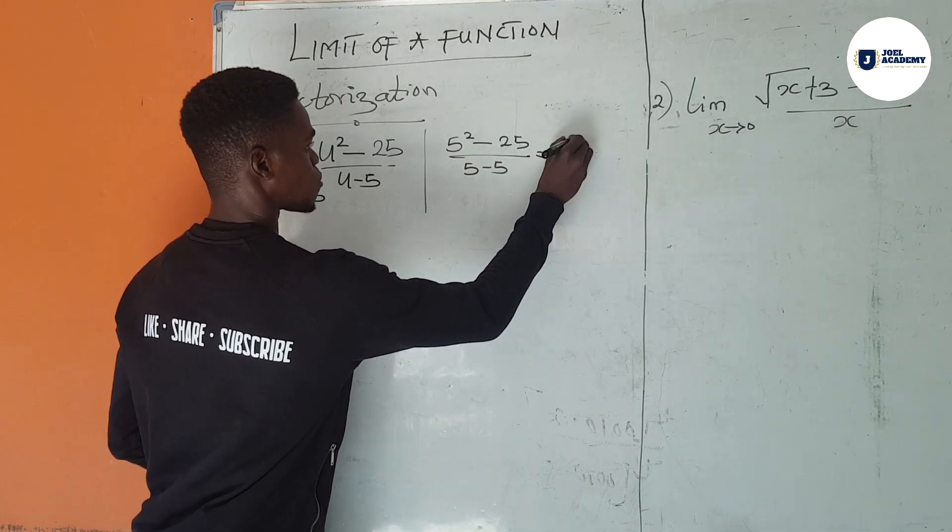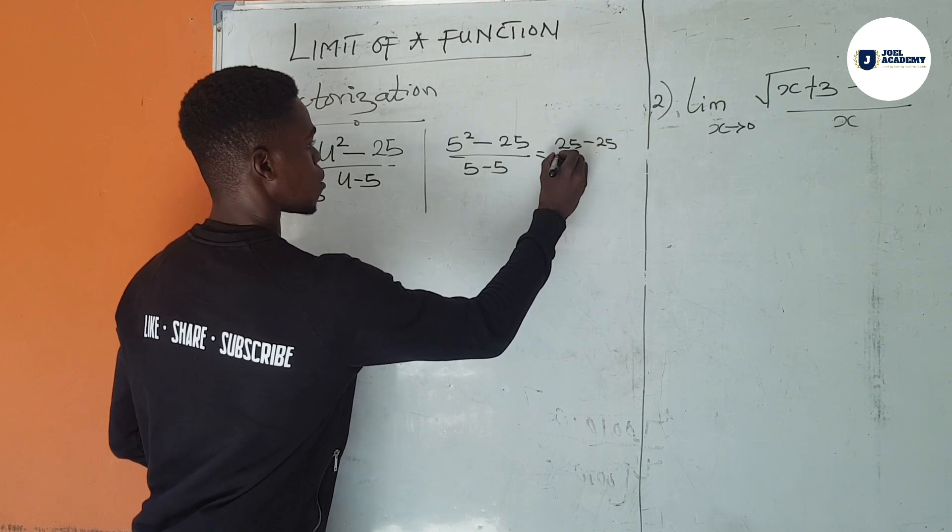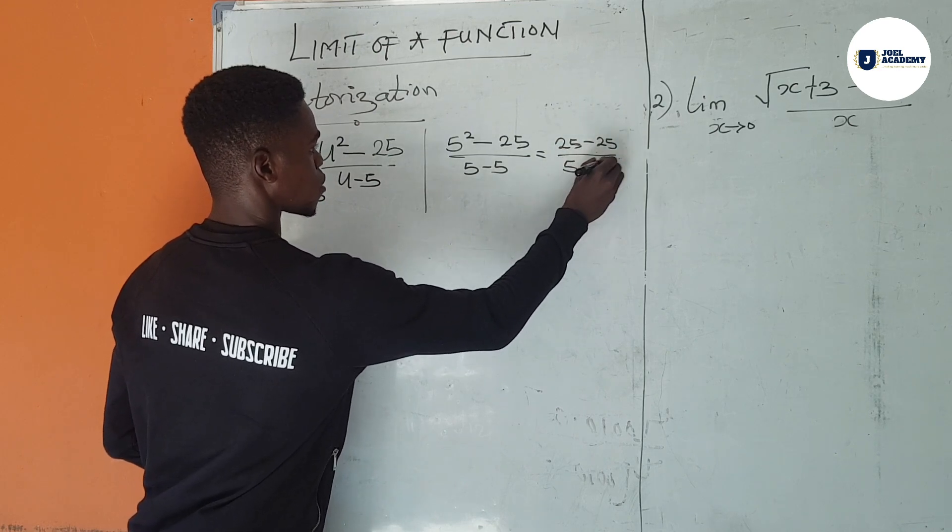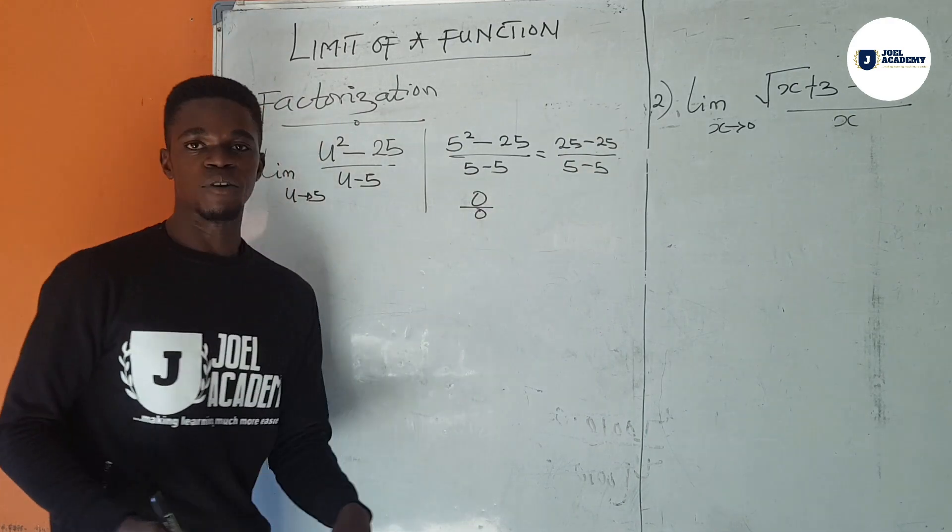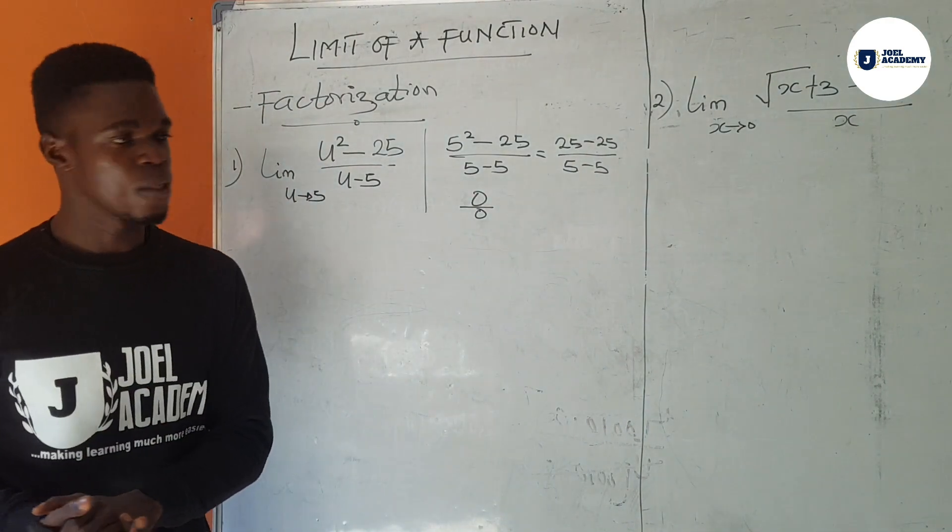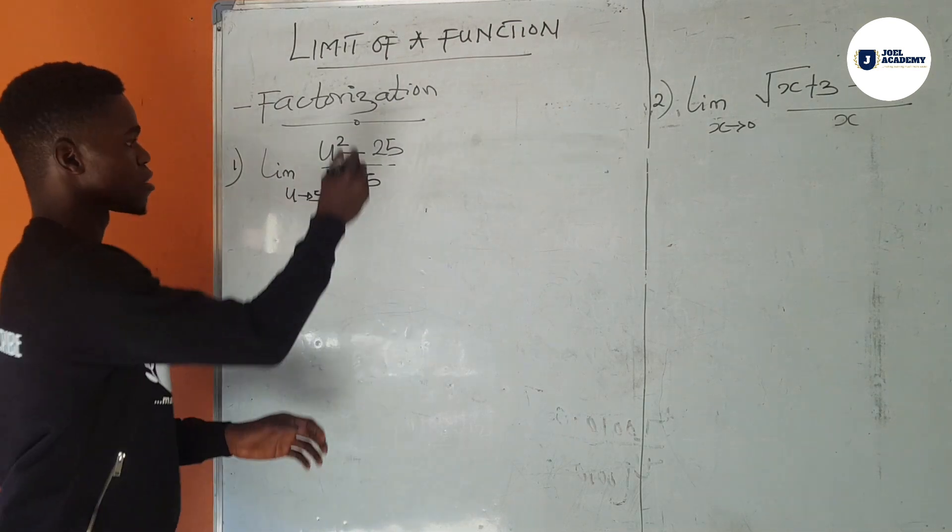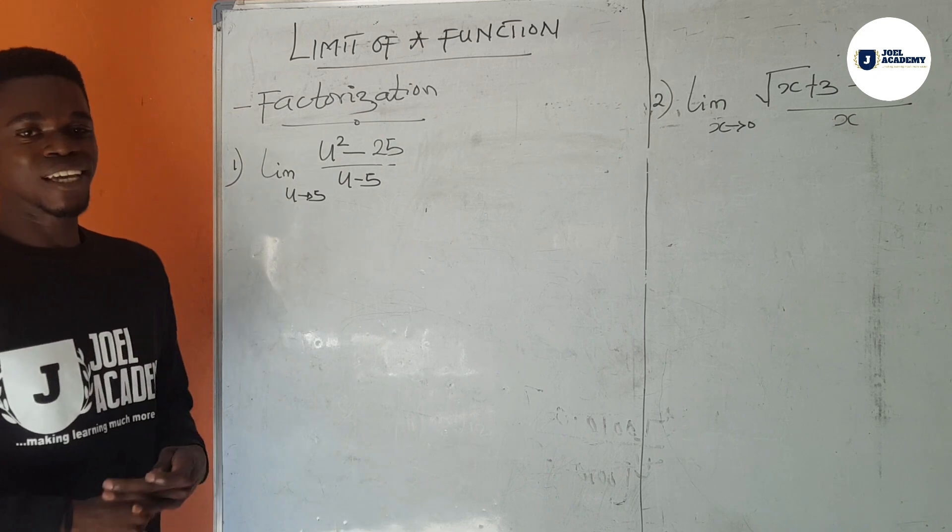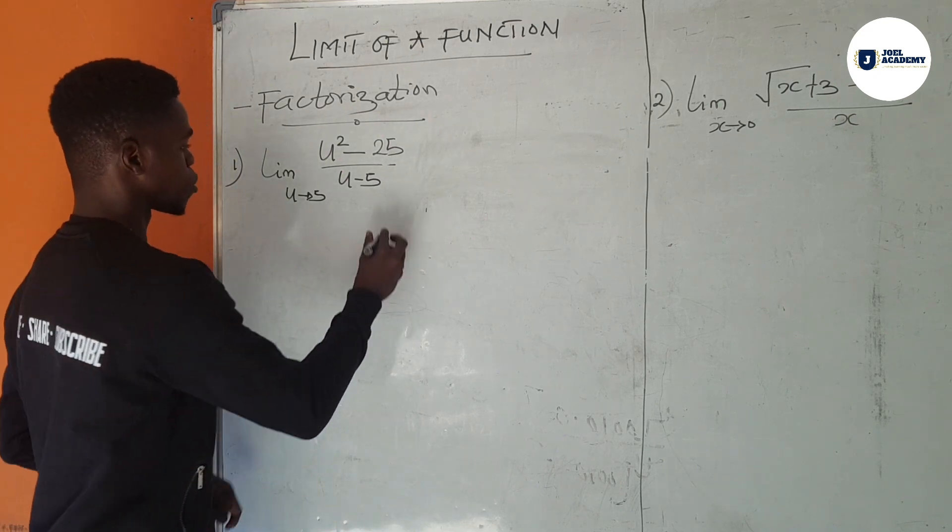We have 25 minus 25 over 5 minus 5. We end up having 0 over 0, and that will give you undefined as your answer. We would not want that. So what we are going to do is first of all, factorize this. After factorizing it, we are able to get an answer that is not undefined. Solution.